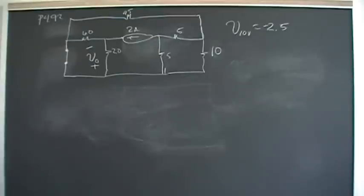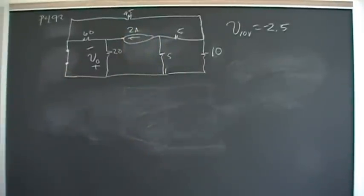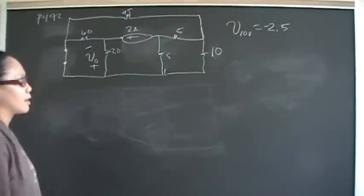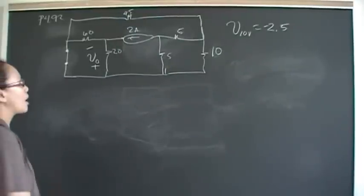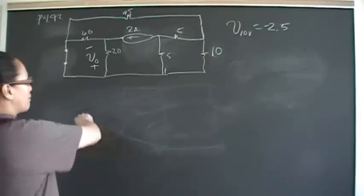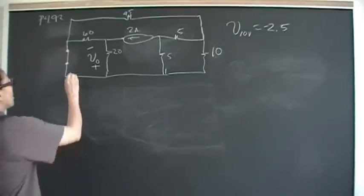I didn't do it that way because, to be honest, I have a hard time seeing the parallel combinations and equivalent resistances quickly. If I was taking a test, I wouldn't use current division — it's not my strength. So instead I chose the mesh method to find the answer.